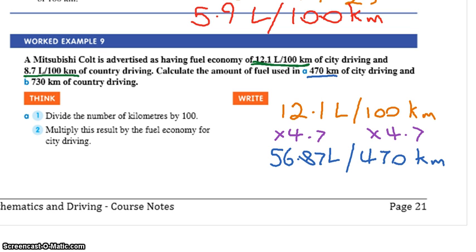The next one says we've got 730 kilometres of country driving. But we've still got, this is our fuel efficiency for country driving. So we've got 8.7 litres per 100 kilometres. But now what do we want our answer to look like? It's going to be litres per what? 730 kilometres. Litres per 730 kilometres.